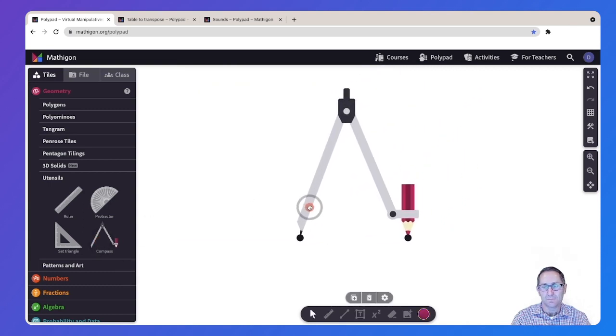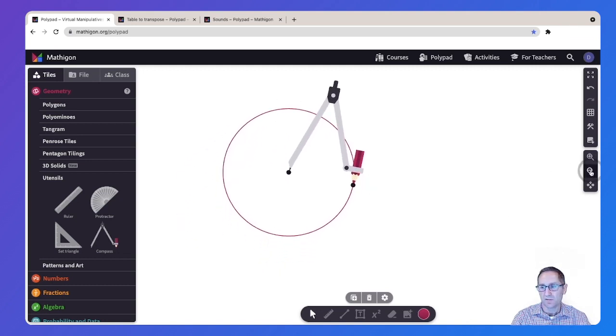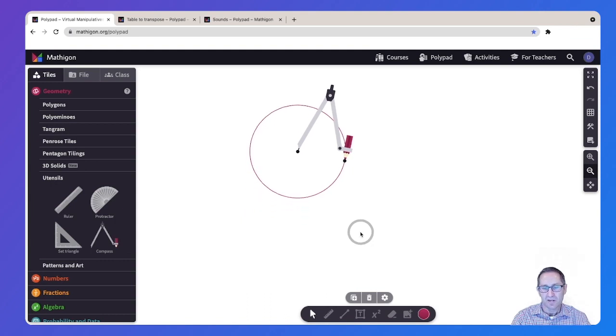Let's take a look at the compass. I'll zoom out a little bit and move the compass down here. So the compass, I can change the size of the opening of the compass with the black circles. Once I have a size that I like, I can click and drag to create a circle with the compass.